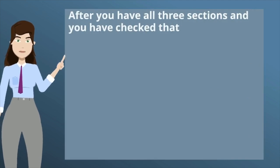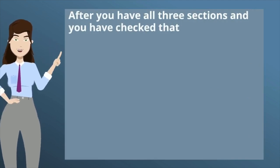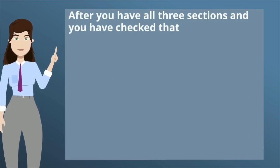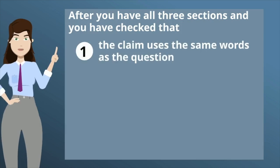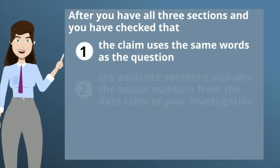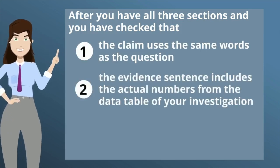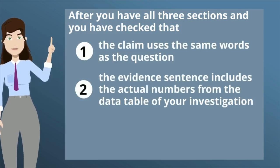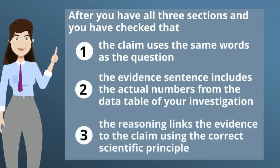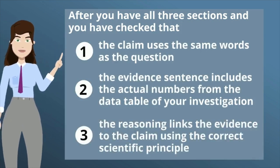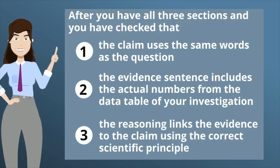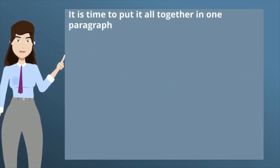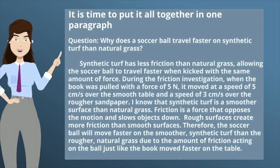After you have all three sections, check that: number one, the claim uses the same words as the question; number two, the evidence sentence includes the actual numbers from the data table of your investigation; and three, the reasoning links the evidence to the claim using the correct scientific principle. It's time to put it all together in one paragraph.